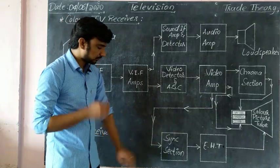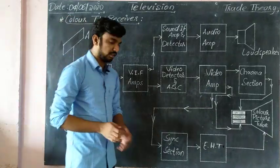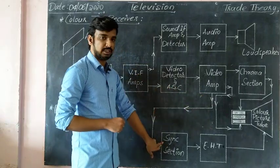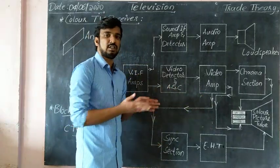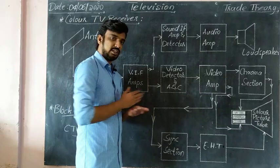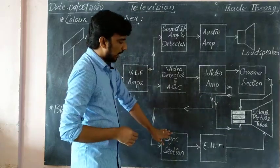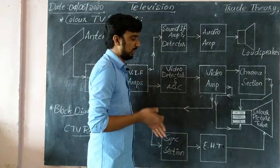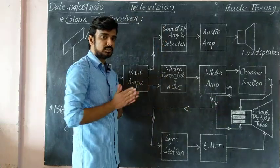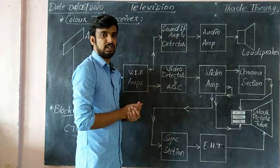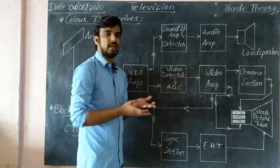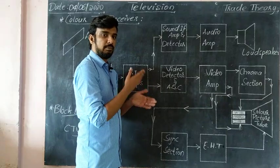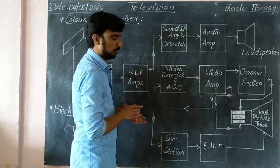Next, the synchronous section. The synchronous section receives input from the video amplifier. The sync pulses are separated, and then with the horizontal amplifier and vertical amplifier, the picture tube is driven via the horizontal deflection coil and vertical deflection coil. That coil controls the electron beam to move left-to-right and top-to-bottom.